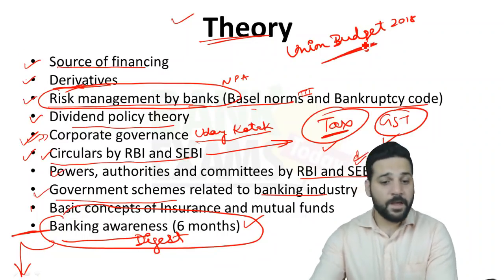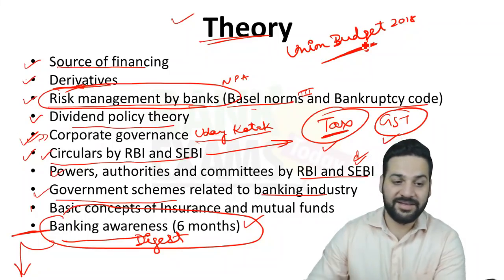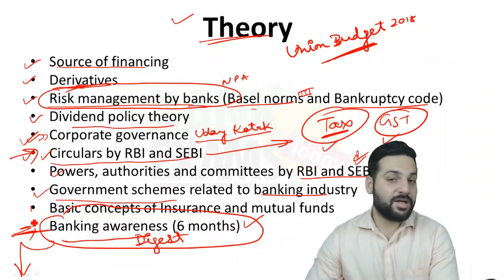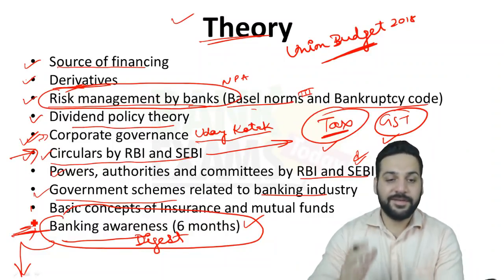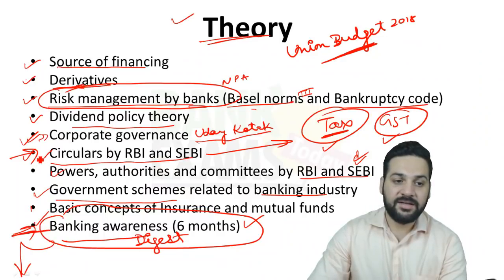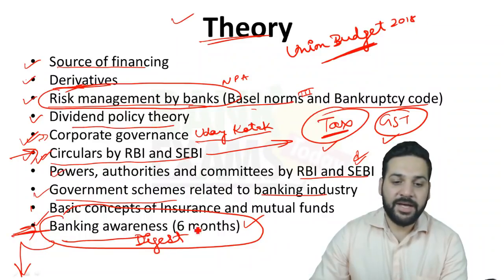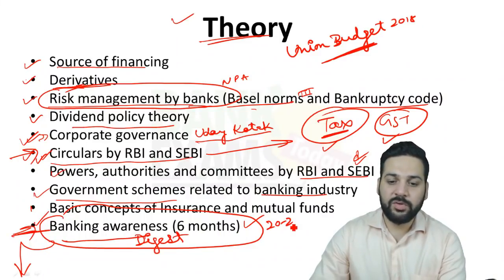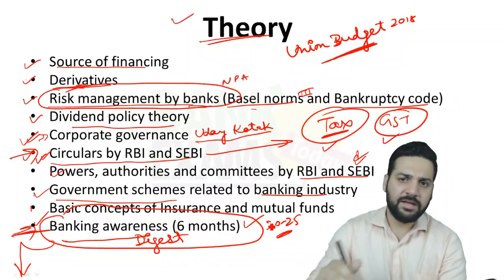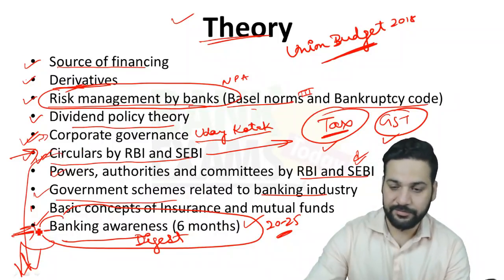The Union Budget 2018 is very important for this exam — make sure you read it. The Banking Awareness Digest and the monthly RBI capsule are two different resources. The Banking Awareness Digest is around 20 to 25 pages of content released every week. Links for both the RBI digest and the banking awareness digest are available in the description.